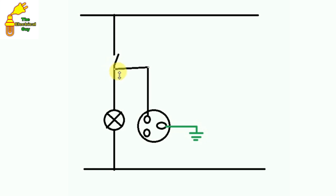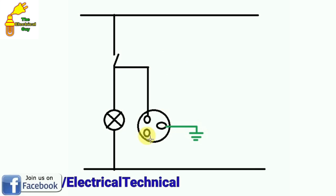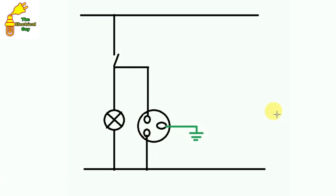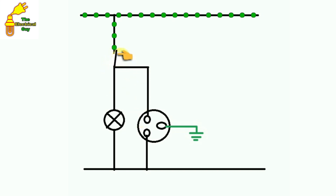The neutral terminal which is left — with this terminal connect a wire and directly connect this wire to the neutral line. You can see that current will flow from here and come till here. It is open here, so current cannot flow forward.